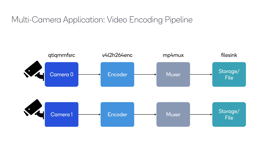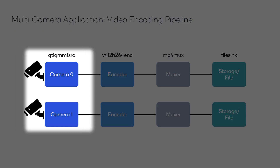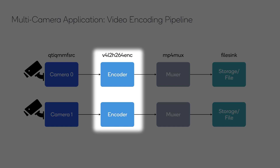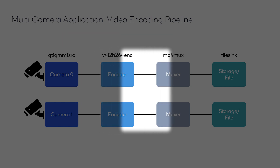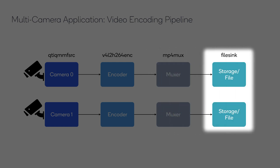In the video encoding pipeline, the first two steps are similar — video is captured from the camera feed via the QTI QMMF Source plugin. After that, the video is encoded into H.264 format using the V4L2 H.264 encoder and parsed using the H.264 parse plugin. The parsed video stream is then multiplexed into an MP4 container using the MP4 MUX plugin. Finally, the processed video data is written to a file using the Filesync plugin.